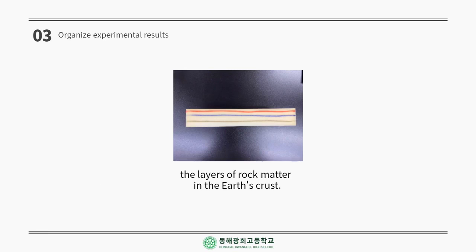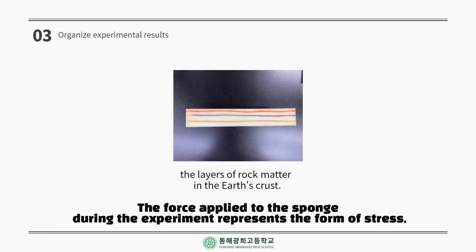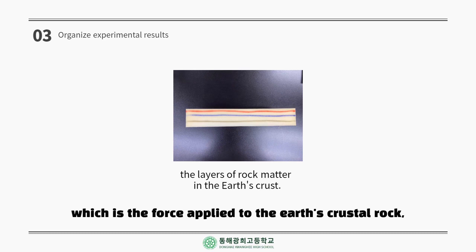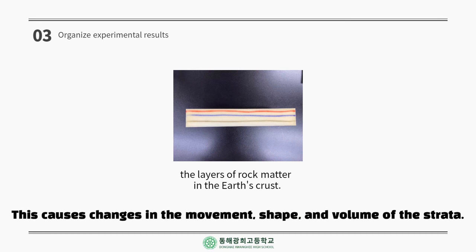The lines drawn on the sponge represent the layers of rock that make up the earth's crust. The force applied to the sponge during the experiment represents stress — the force applied to the earth's crustal rock — which is the resistance force applied to the inside of an object when force is applied from the outside. This causes changes in the movement, shape, and volume of the strata.